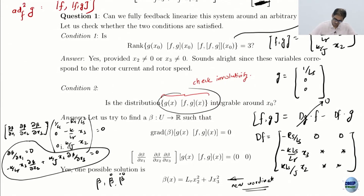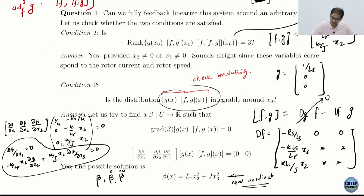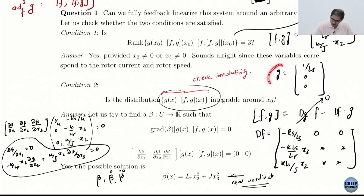The second condition was to check the involutivity of the distribution made by {g, ad_f g, ..., ad_f^(n-2) g}. In this case ad_f^(n-2) g is basically ad_f g, and this was easy to verify. We had g and ad_f g and just needed to check if this distribution is involutive — i.e., whether the Lie bracket of g and ad_f g is in the distribution itself.